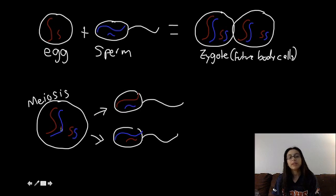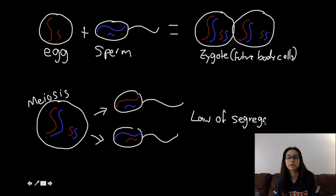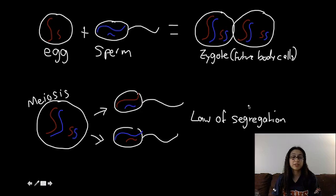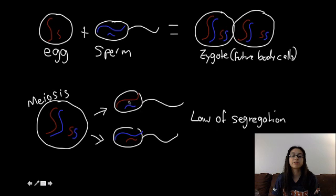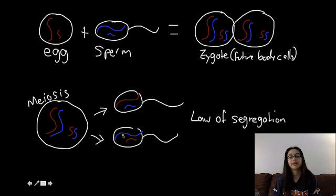Separating the homologous pairs like this is actually called the law of segregation. If you think about what segregation means — especially in American history — segregation means to separate. In American history, Black people had their own drinking fountains while white people had theirs; Black people had their own schools while white people had theirs. So here, the law of segregation says that in meiosis, homologous pairs have to wind up in different sperm or egg. You can't have a homologous pair wind up in the same sperm or egg. Homologous pairs have to separate during meiosis.